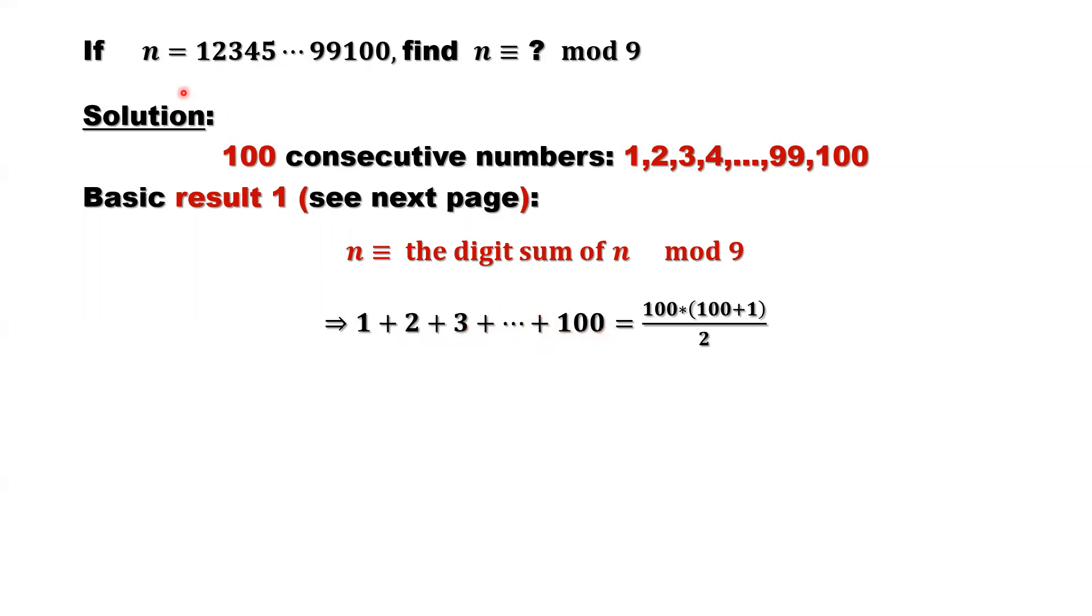So to find the remainder of N, it's equivalent to find the remainder of this sum. We know the formula, right? 100 times 100 plus 1 divided by 2, which is 5050 divided by 9, the remainder is 1.